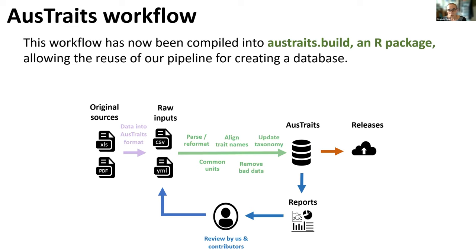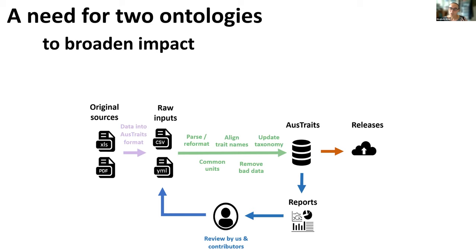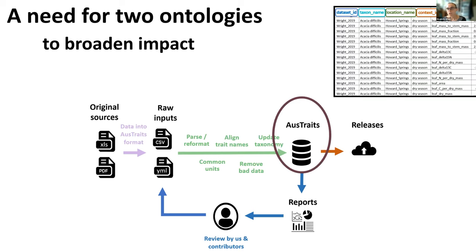That's where we stood a year ago. One of our big projects over the past year has been compiling our workflow into a standalone R package, which will very shortly be released, allowing any group of ecologists for any taxonomic group to build their own trait database. The impetus for this was when a group of invertebrate ecologists approached us asking if they could reuse OzTraits to make an invertebrate trait database. A group simply needs to add data, have their own trait dictionary and taxonomic resource, and everything else is provided. This led to the next step: if another group was using our data structure, we really needed to establish a true ontology to more properly define what each term meant.